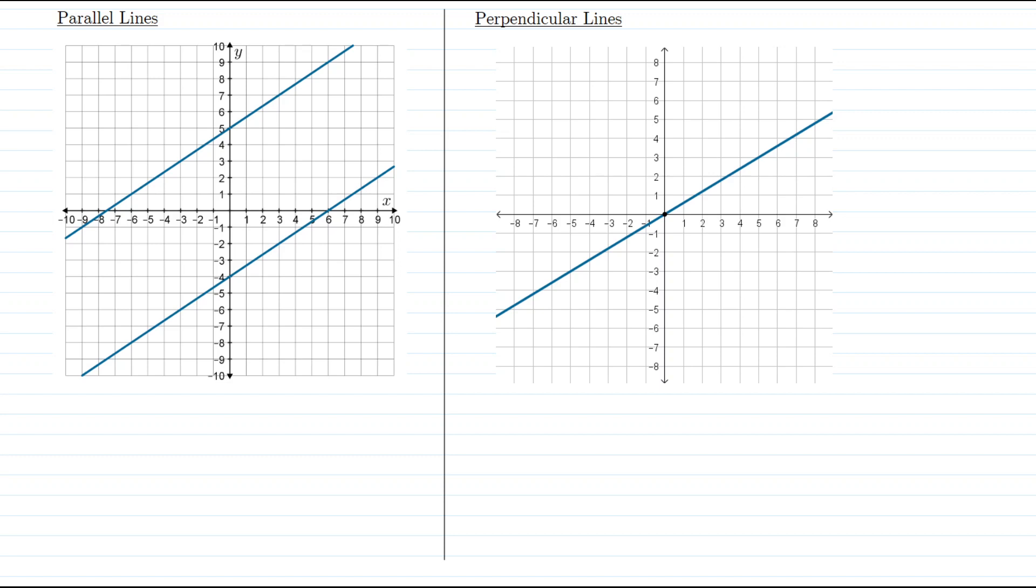What does it mean for two lines to be parallel? Well, essentially it means they go in the same direction, and looking at parallel lines on a graph, it appears that they have the same amount of slant. But what does that say about their actual slope values?